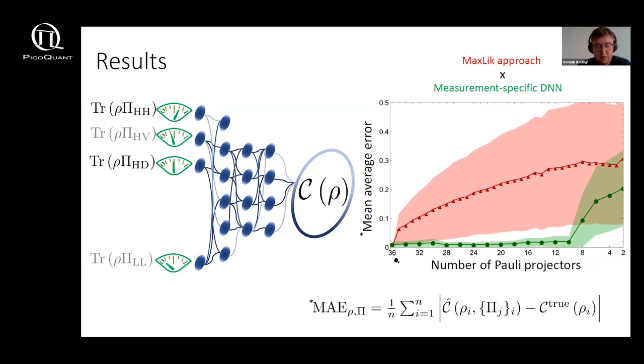In the figure we can see the comparison between deep neural network approach and maximum likelihood tomography as we depict the absolute difference between true and predicted values of concurrence averaged over 5000 randomly generated mixed states with the depicted uncertainty region of one sigma.